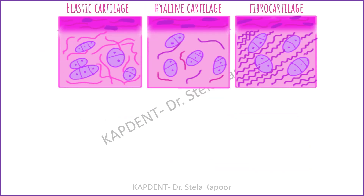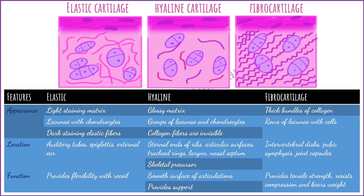The given table enumerates features of these three cartilage types based on appearance, location, and function. Elastic cartilage has a light staining matrix, lacunae with chondrocytes, and dark staining elastic fibers. Hyaline cartilage appears as a glassy matrix with groups of lacunae, chondrocytes, and invisible collagen fibers. Fibrocartilage appears with thick bundles of collagen and rows of lacunae with cells.